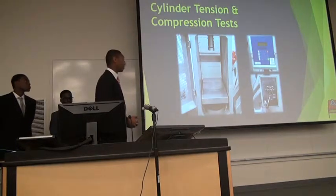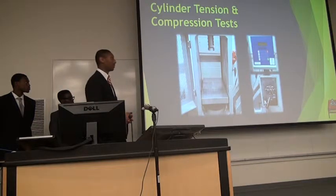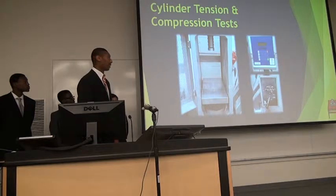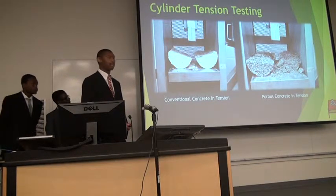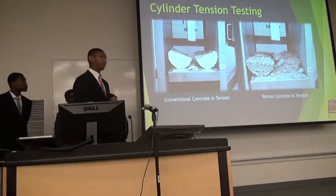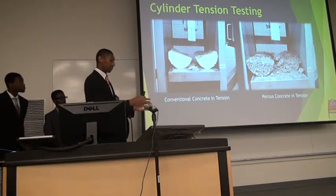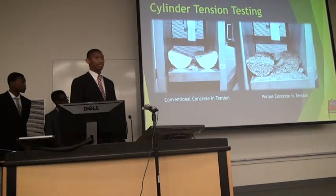This is the Forney Concrete Cylinder Test Machine. At the top, this is how the load is applied. On the right-hand side, there's a keypad to change the settings, and on the bottom we changed the settings for how fast or slow it moves down. These are two pictures of the tension test we conducted. On the left is conventional concrete in tension — it stayed fairly together. The concrete was placed sideways and that's how tension was applied. On the right, the porous concrete broke into many pieces.